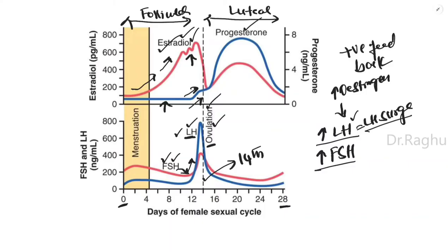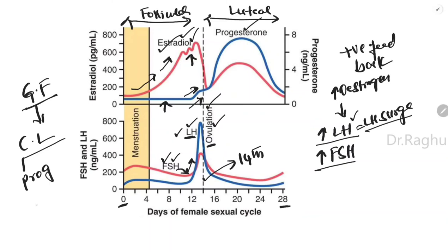Ovulation is the rupture of the Graafian follicle, releasing the secondary oocyte. After rupturing, the Graafian follicle is converted into the corpus luteum. The corpus luteum produces both progesterone and estrogen during the luteal phase, with a second peak of estradiol and a more prominent rise in progesterone, since the corpus luteum produces more progesterone than estrogen.